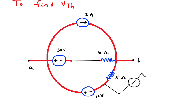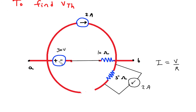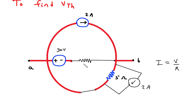The direction of the current source will be as shown, and the current equals I equals V by R. V is 10 and R is 5, so 10 divided by 5 is 2 Ampere. Now we will convert this 30V source into its equivalent current source. This gives 10 Ohm in parallel with a current source, and the current equals V by R: V is 30, R is 10, so this will be 3 Ampere.